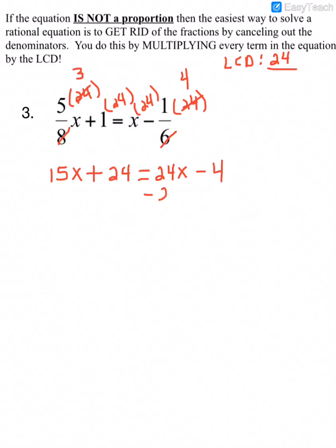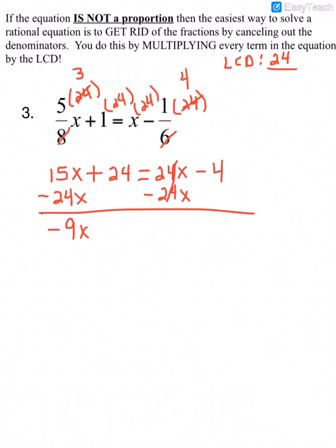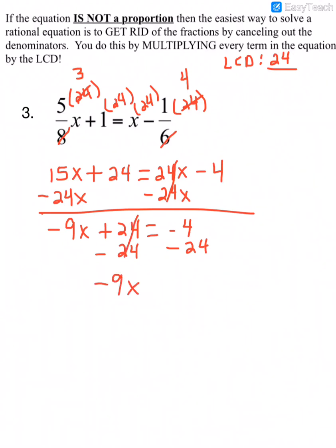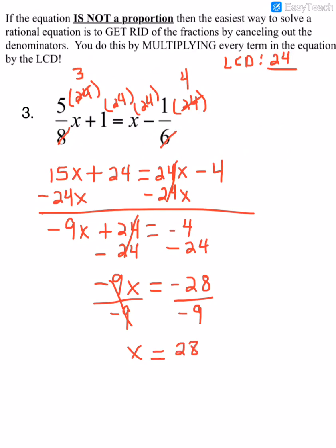I want to get all variables on one side and all constants on the other. Subtracting 24 from both sides gives me negative 9x equals negative 28. Dividing both sides by negative 9, I get x equals 28 over 9.